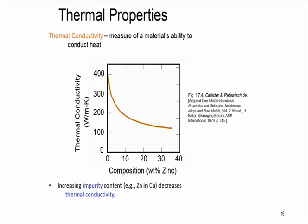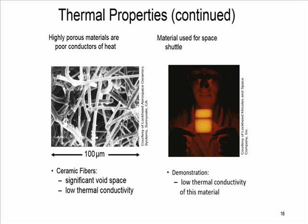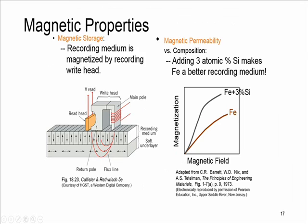Thermal conductivity of copper decreases when you add zinc. What's thermal conductivity? We can discuss its usage for a material that has very low thermal conductivity — for example, in space shuttle tiles, where silica fiber insulation provides very low heat conduction. Magnetic properties is among other properties. You can see how adding 3% of silicon to iron makes it a better magnet. This idea is used in recording tapes, where the head moving over the recording medium magnetizes it and information is saved there. What type of material is used for this purpose? You can search keywords like 'recording medium material in tapes' and find at least two different types of material.